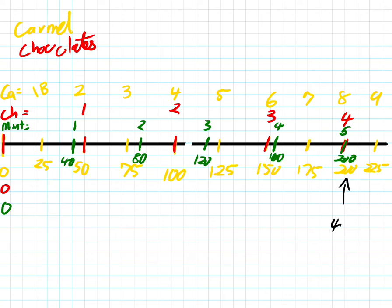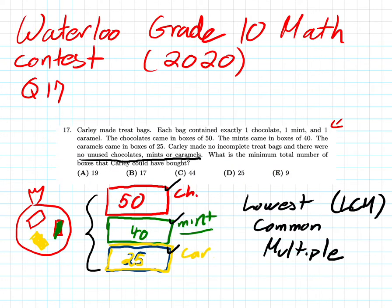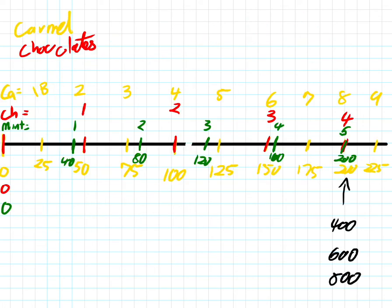If we were to continue this forward, they overlap at 400, they overlap at 600, they overlap at 800, and we can buy many more boxes. But if we go back to the question, it asks for the minimum. So in other words, she wants to spend the least amount of money and have nothing left over at this point. So we can tell by our lowest common multiple that they need to get to 200 candies in each.